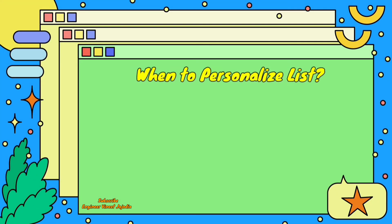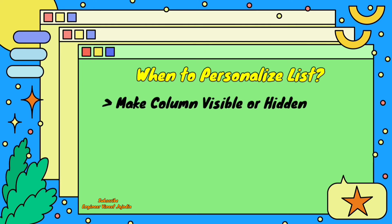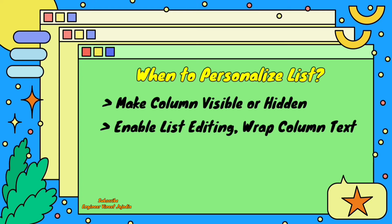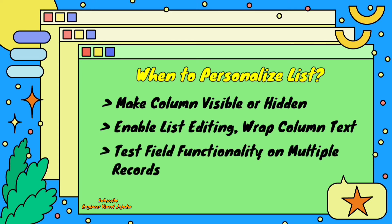First, we are going to see how we can personalize a list in ServiceNow. When a user should personalize a list, it all depends upon the user's choice — whether the user wants to see or hide some fields on the list, enable list editing or not, wrap column text or not. If the user is a developer or tester and wants to test some field's functionality for all records, then with the help of personalization, users can bring up that particular field and sort the list according to that field. It all depends upon the user's personal choices of how they want to see that particular list.